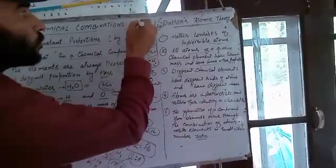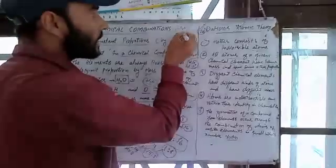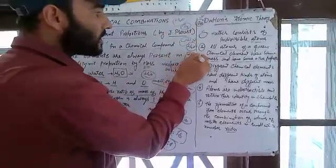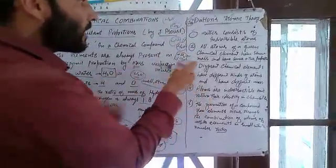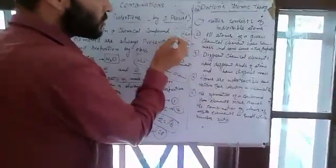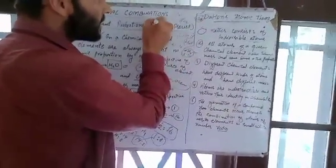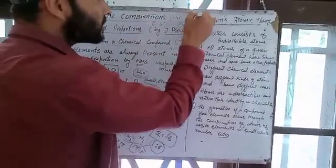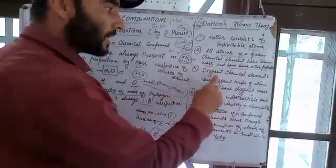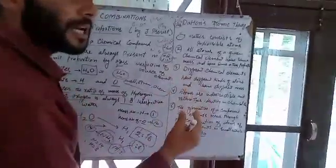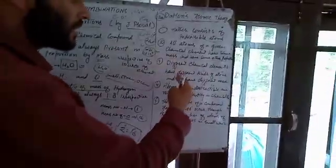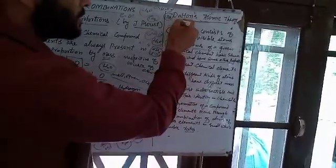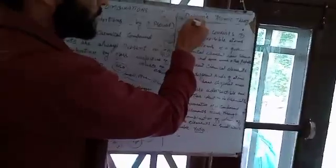Postulate three: different chemical elements have different kinds of atoms and different masses. For example, H₂O, CO₂, and NH₃ are different kinds of compounds. In NH₃ there are nitrogen and hydrogen; in CO₂ there are carbon and oxygen; in H₂O there are hydrogen and oxygen. Different compounds can also share some elements, like CO and CO₂, but the proportions differ.